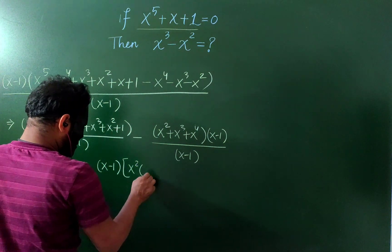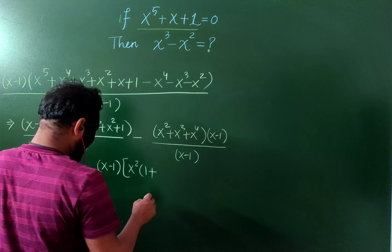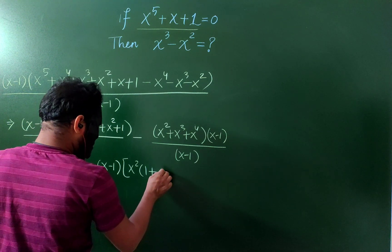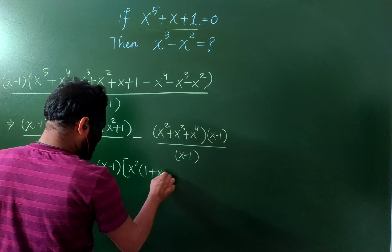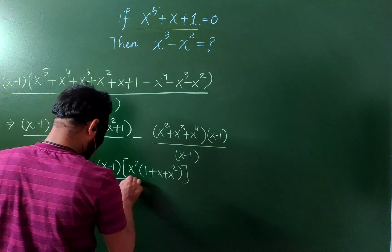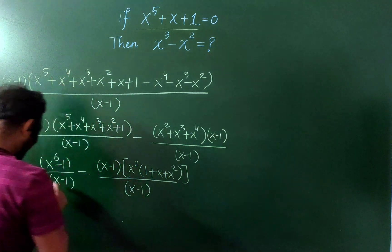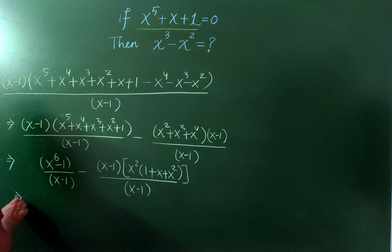common x^2, 1 plus, now this is 1 plus x plus x^2, all divided by x minus 1, and now let's use the difference of squares formula.